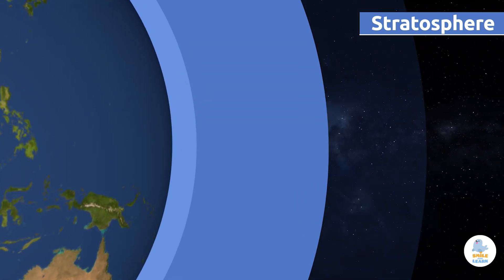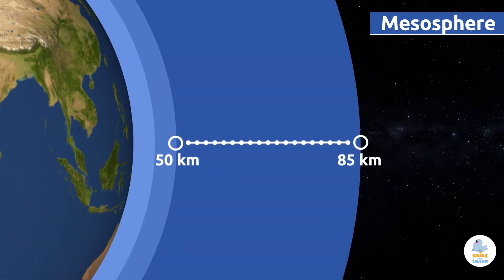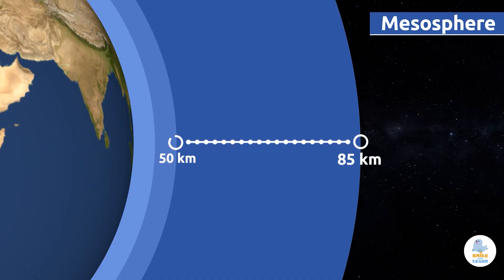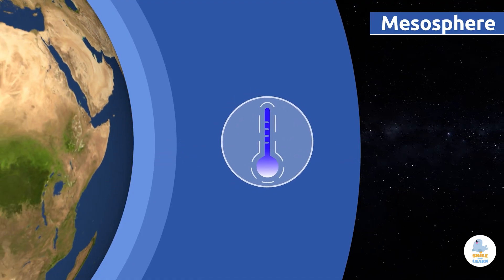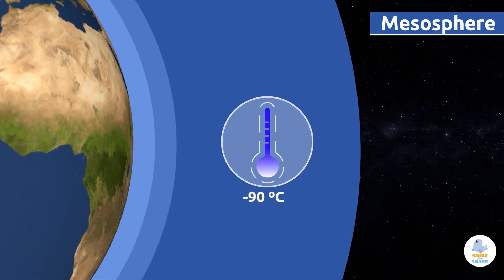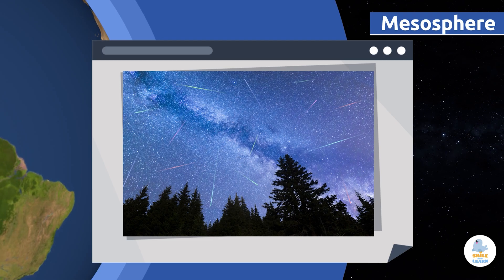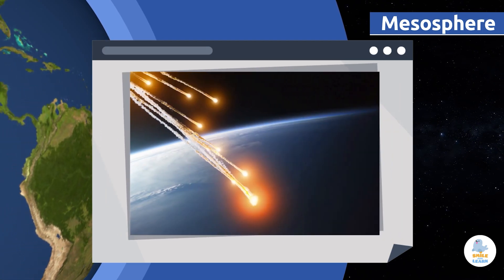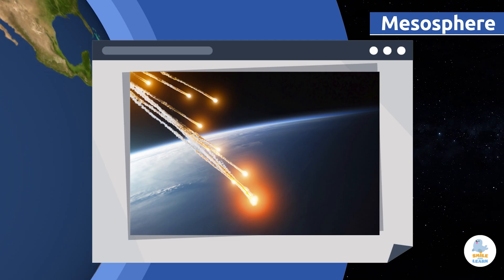The mesosphere extends to an altitude of 50 to 85 kilometers above sea level. The mesosphere is the coldest layer of the atmosphere — temperatures can drop down to 90 degrees Celsius below zero. Shooting stars occur in the mesosphere. These are meteors that travel through space; as soon as they hit the mesosphere, they start burning up, leaving a tail behind them.